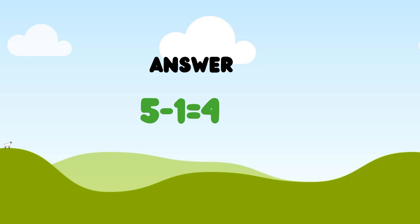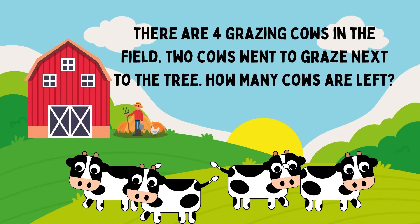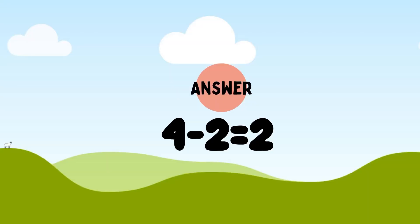Next question. There are 4 grazing cows in the field. 2 cows went to graze next to the tree. How many cows are left? So, total 4 cows minus 2 cows. 4 minus 2 is equal to 2. So, 2 cows left in the field.